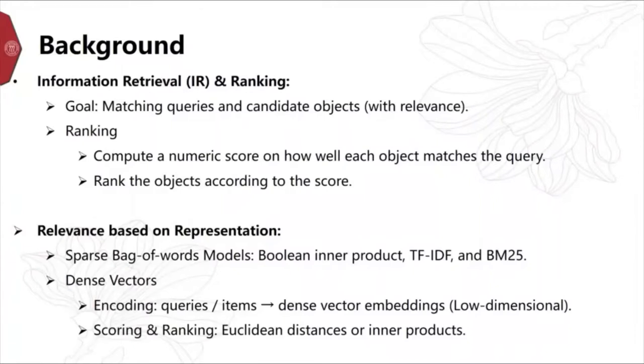A popular paradigm is to compute such a relevant score based on the representation of queries and objects. For example, in text ranking tasks, sparse bag-of-words models are well-known, such as TF-IDF and BM25. Recently, researchers proposed to utilize deep learning approaches and encode queries and items to dense vector embeddings. The relevance is estimated by the distance, or inner products, between the dense vectors of queries and items.